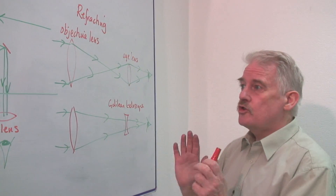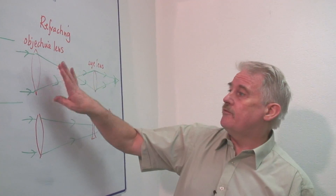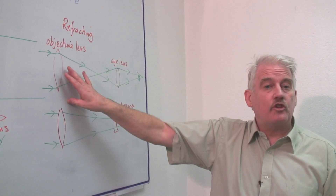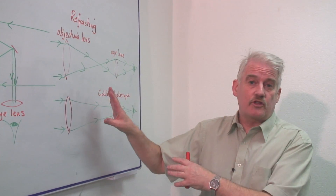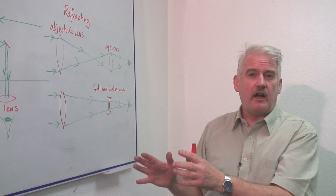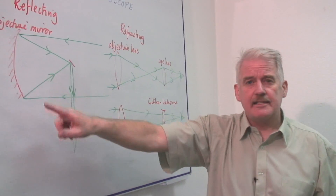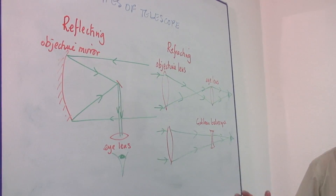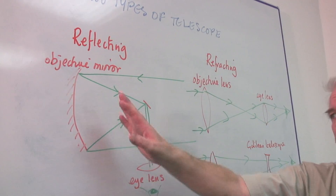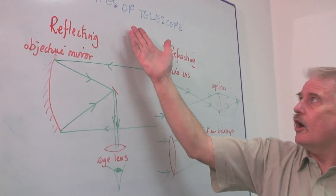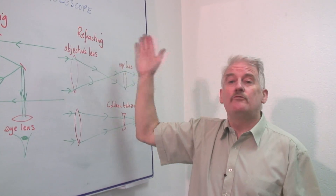So those are the two basic types of telescope. A refracting telescope is normally used on Earth, but can be used for astronomy, but only of a small kind, up to a foot in diameter. And then the reflecting telescope, up to 15 feet in diameter, used in all of the big optical telescopes throughout the world. So there we are — two types of telescope: reflecting and refracting.